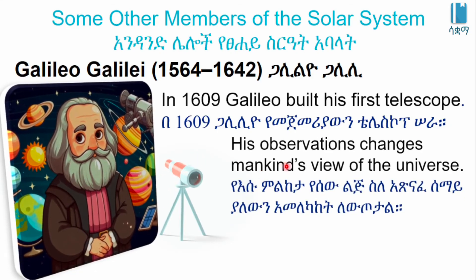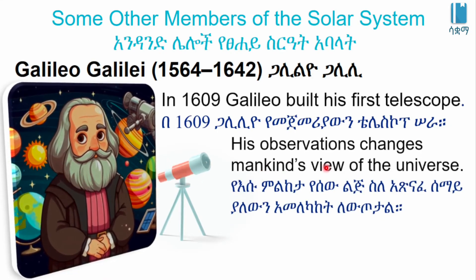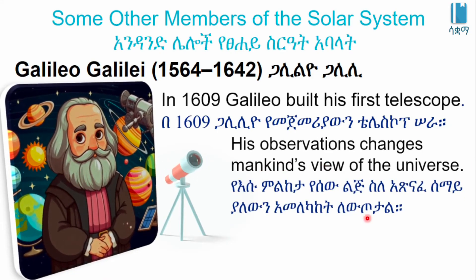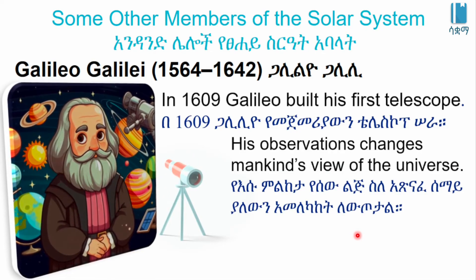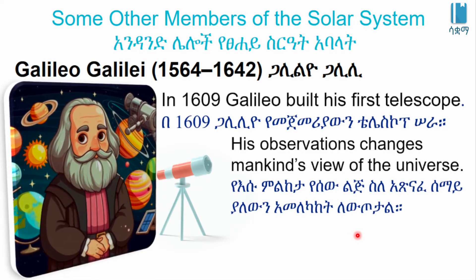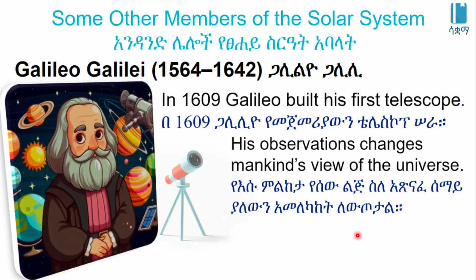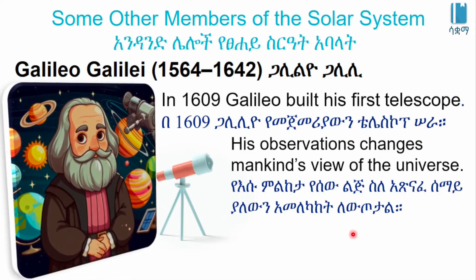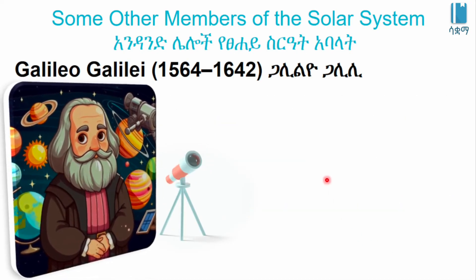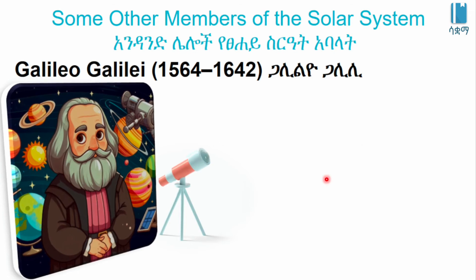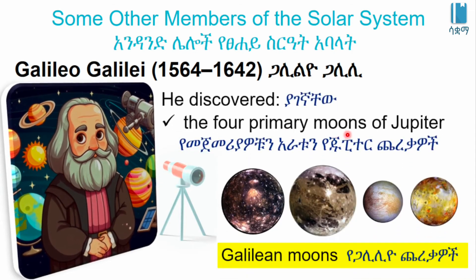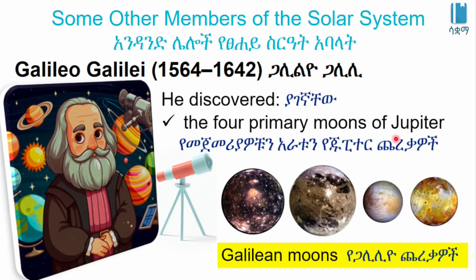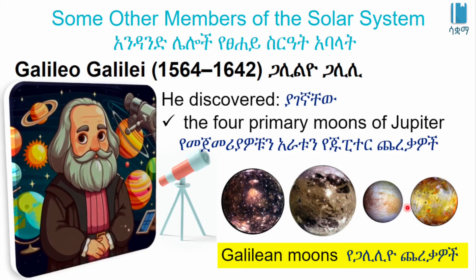His observations changed mankind's views of the universe. He discovered the four primary moons of Jupiter, known as the Galilean moons.